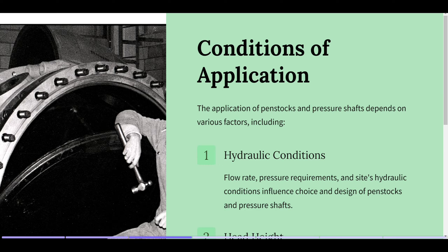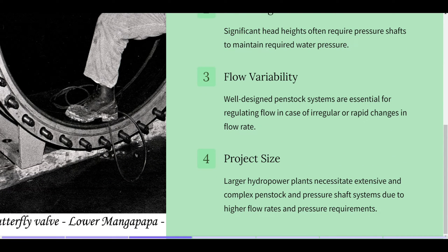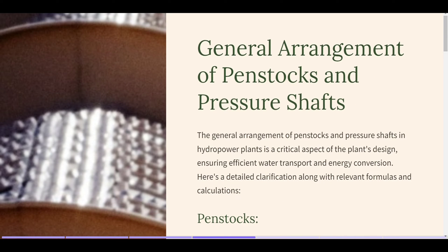Conditions of application: The application of penstocks and pressure shafts depends on various factors, including hydraulic conditions — flow rate, pressure requirements, and site's hydraulic conditions influence the choice and design. Head height — significant head heights often require pressure shafts to maintain required water pressure. Flow variability — well-designed penstock systems are essential for regulating flow in case of irregular or rapid changes in flow rate. Project size — larger hydropower plants necessitate extensive and complex penstock and pressure shaft systems due to higher flow rates and pressure requirements.